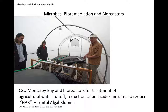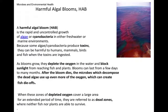A wonderful example of a microbial bioreactor is at CSU Monterey Bay, where they're using microbial bioreactors to treat agricultural water runoff. Runoff from fields can contain pesticides, herbicides, fertilizers, and high levels of nitrates, which contribute to harmful algal blooms. The pesticides and fertilizers can contaminate creeks, rivers, coastal waters, and potentially human drinking water. Microbial bioreactors can be used to reduce the occurrence of harmful algal blooms in rivers, lakes, and coastal waters.